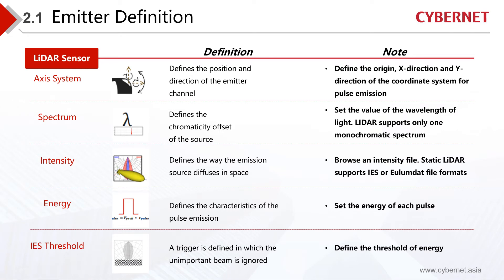The emitter mainly includes the following parts. First is the axis system — how to install and fix it. If there is no way to cover the perspective of the radar simulation, we can rotate the radar through the shaft system, adjust it to a suitable area, and verify whether its FOV or field of view meets our needs. Spectrum defines the emitter in terms of wavelength and color, suitable for multi-wavelength laser research. Intensity defines the way the light source diffuses in space and supports IES or ULU files imported directly to define light intensity. The energy value defines the form of the pulse, usually set in Joules. The IES threshold defines a trigger where rays with less than 1% energy are ignored.